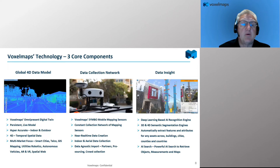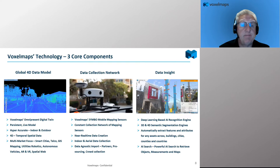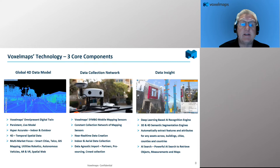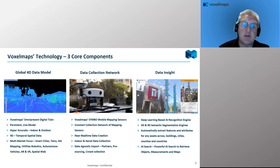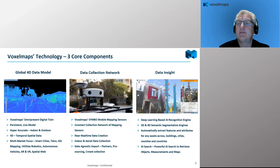Our goal is to build a digital twin of the planet — persistent, very accurate, consuming both indoor and outdoor data sets. It's a 4D temporal spatial database, so we can store and manage data through time series, going back to look at change detection and do automated feature extraction across a number of different use cases. We're also multi-market focused — working with state and local governments on smart cities, telecommunications, GIS mapping, utilities, robotics, and autonomous vehicles. Even some of the largest tech companies in the world are existing customers.